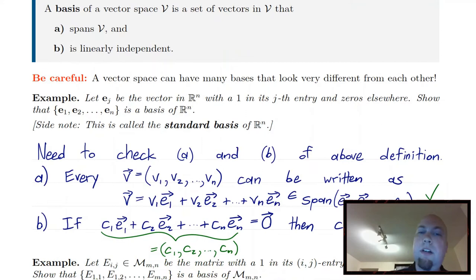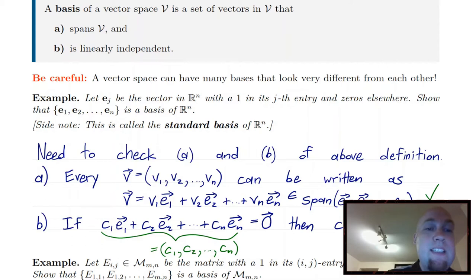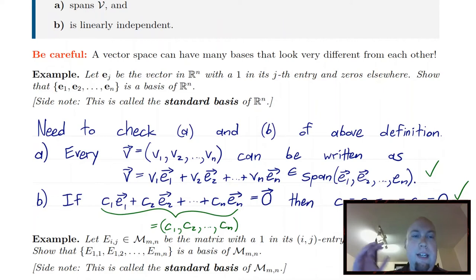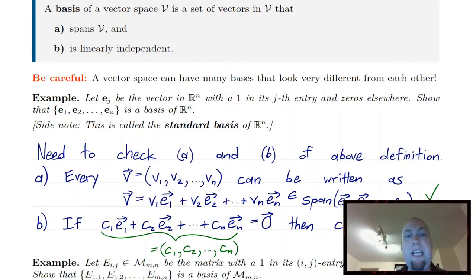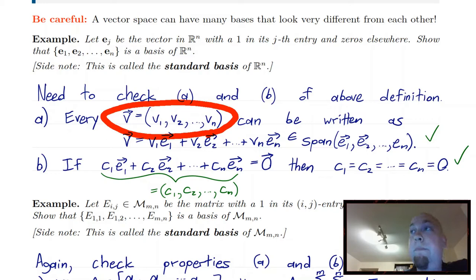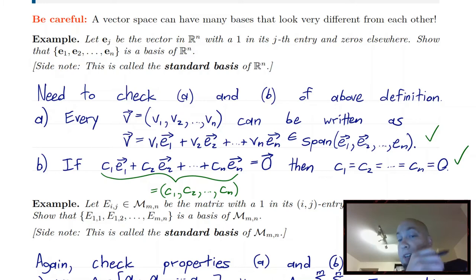Let's go through some standard examples of bases in various vector spaces. Starting with Rn — the set of n-tuples — this set turns out to be a basis, where e1 is the vector with a one in the first entry and zeroes everywhere else, e2 has a one in the second entry and zeroes everywhere else, and so on down to en, which has a one in the last entry and zeroes everywhere else. You probably already saw this basis in introductory linear algebra. To show it's a basis, we check the two properties. For spanning, just pick any vector in Rn; our goal is to show it can be written as a linear combination of these standard basis vectors.